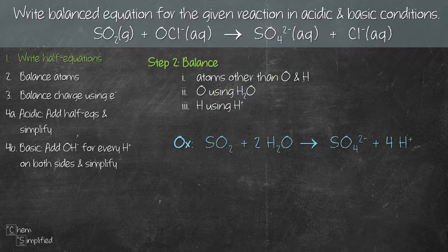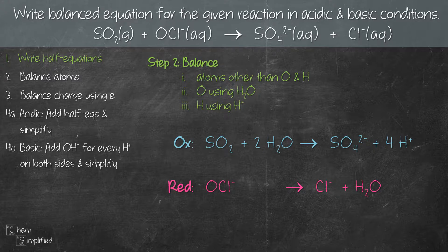We need to do the same thing for the reduction equation. Starting with Cl — it's already balanced, both sides have 1 Cl. Next we balance oxygen: on the left we have 1 oxygen, on the right we have none, so we add 1H₂O on the right hand side. Moving on to H, we don't have any H on the left but we have 2H on the right, so we add 2H⁺ on the left hand side. With that we're done with step 2.